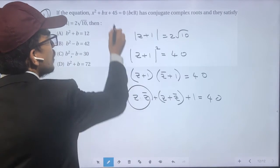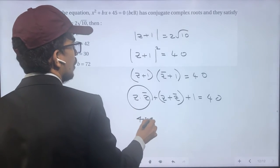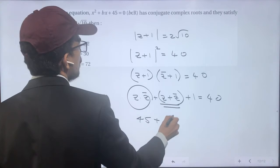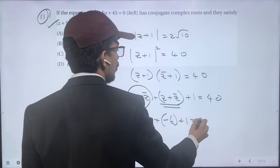This is the product of roots, which is 45. This is the sum of roots, which is -b. So -b + 1 = 40 - 45.